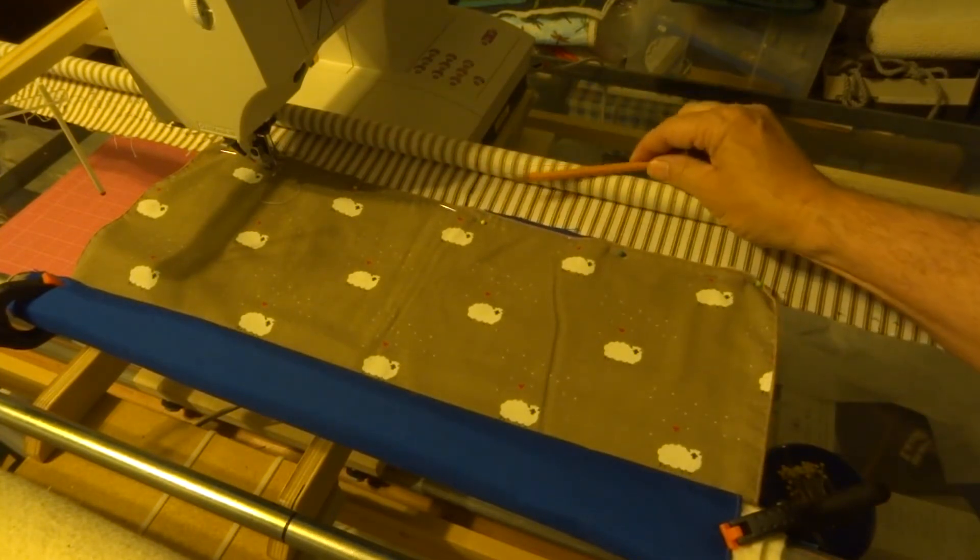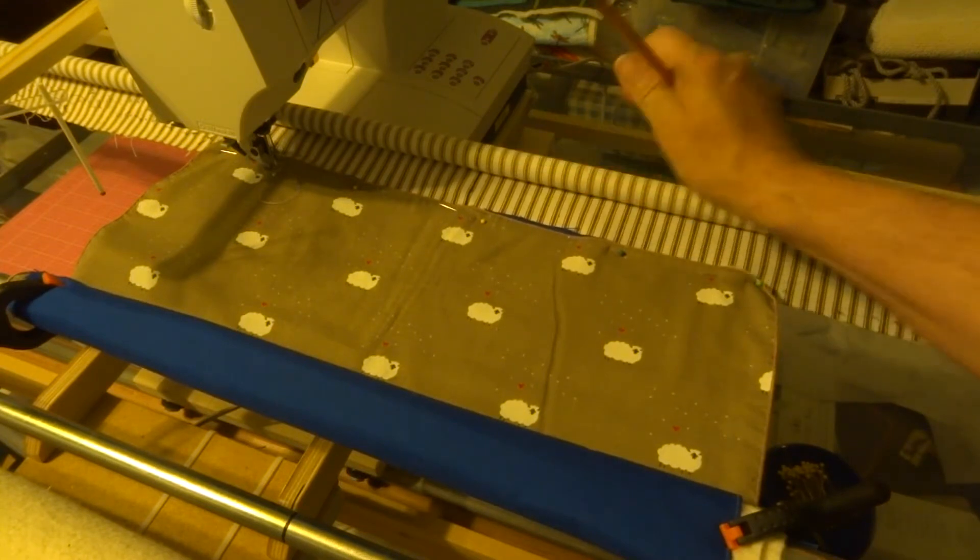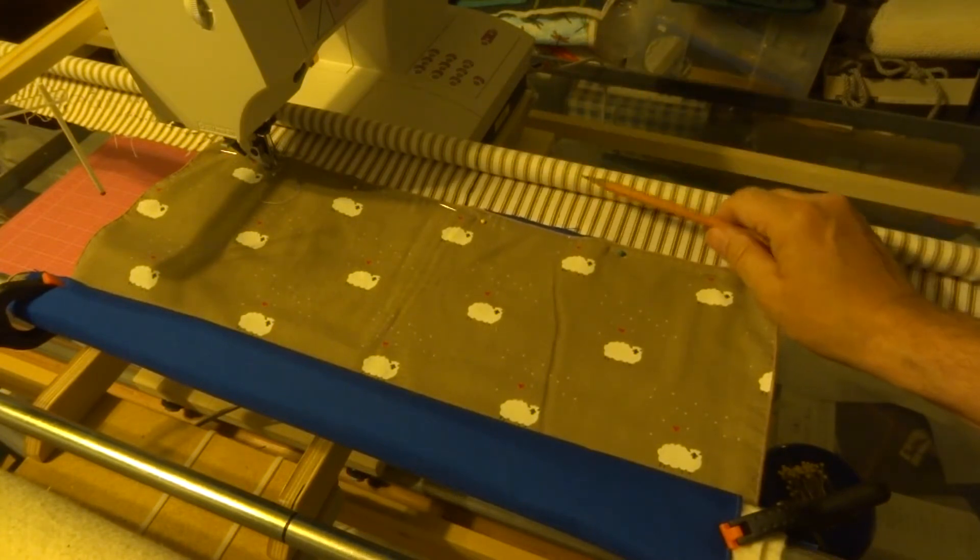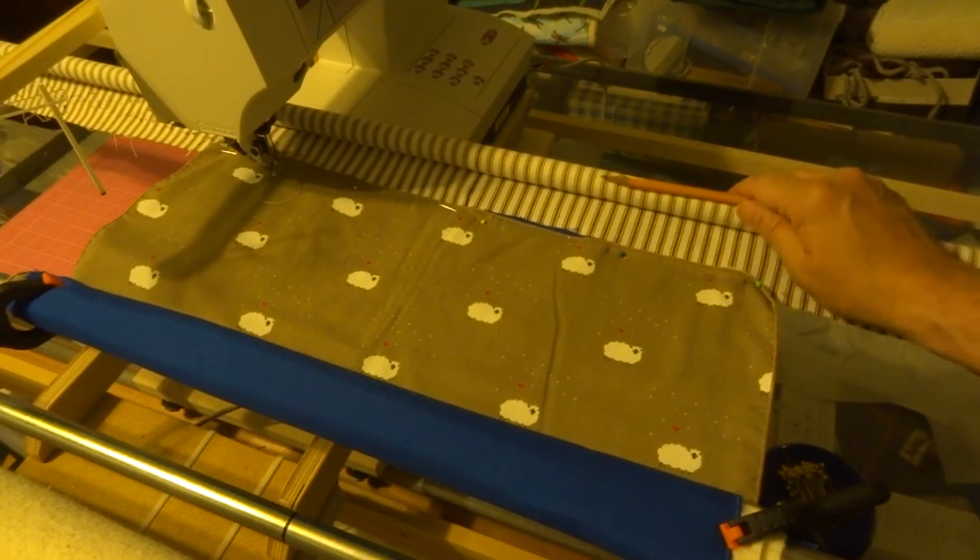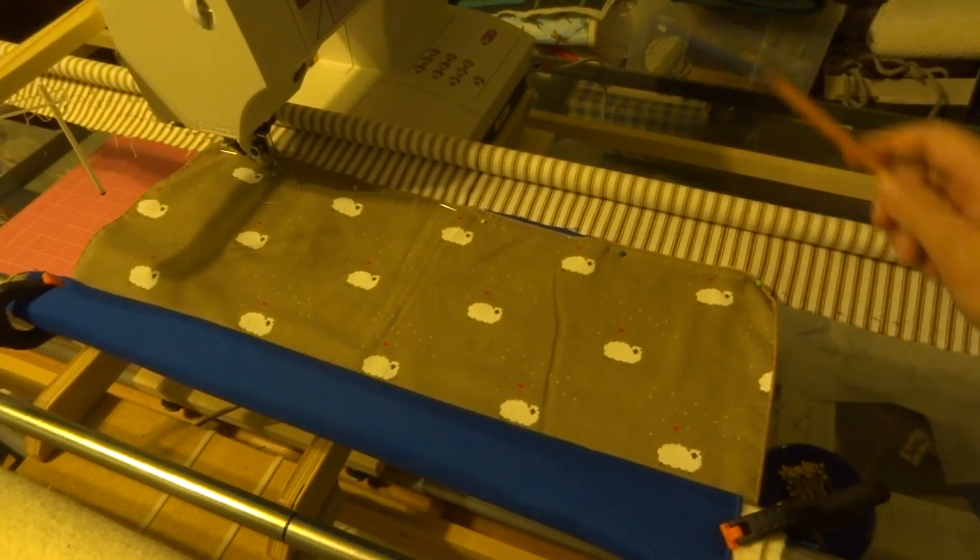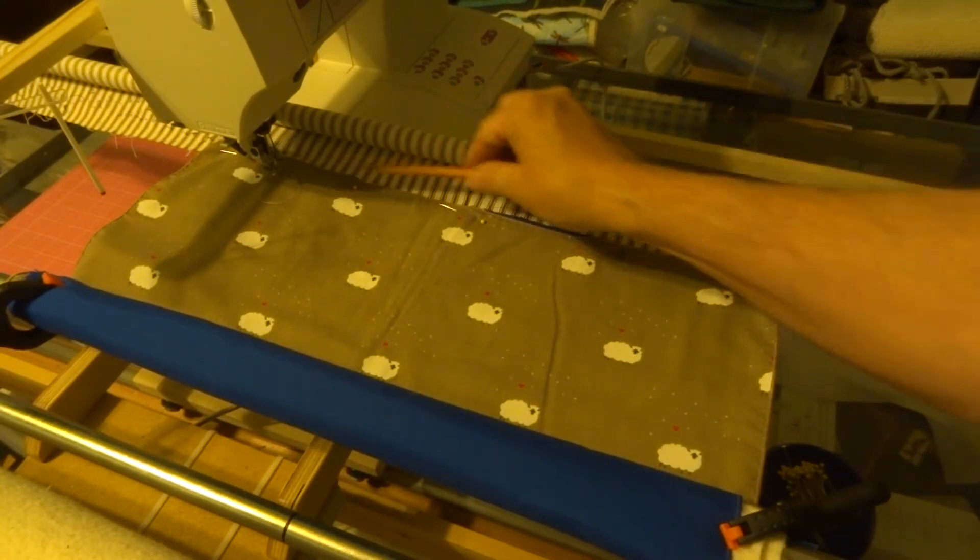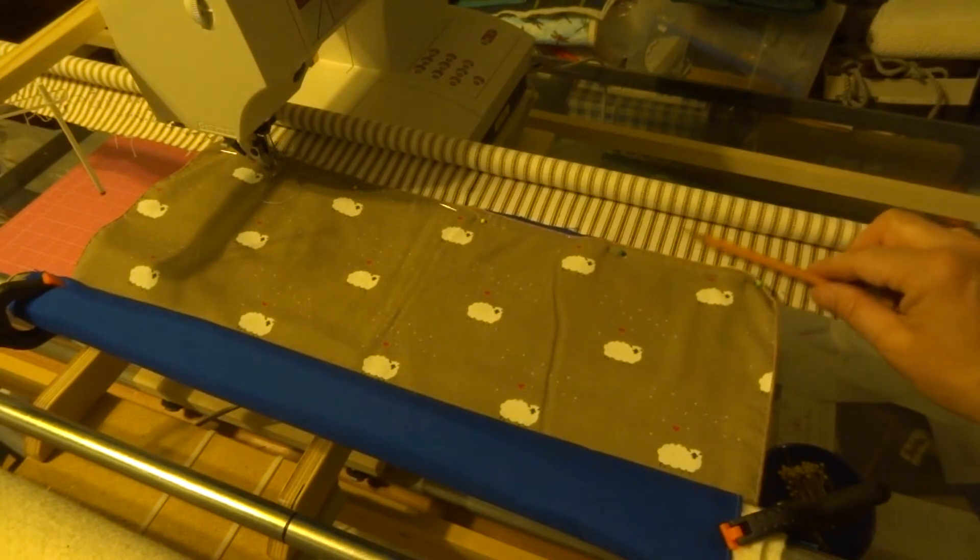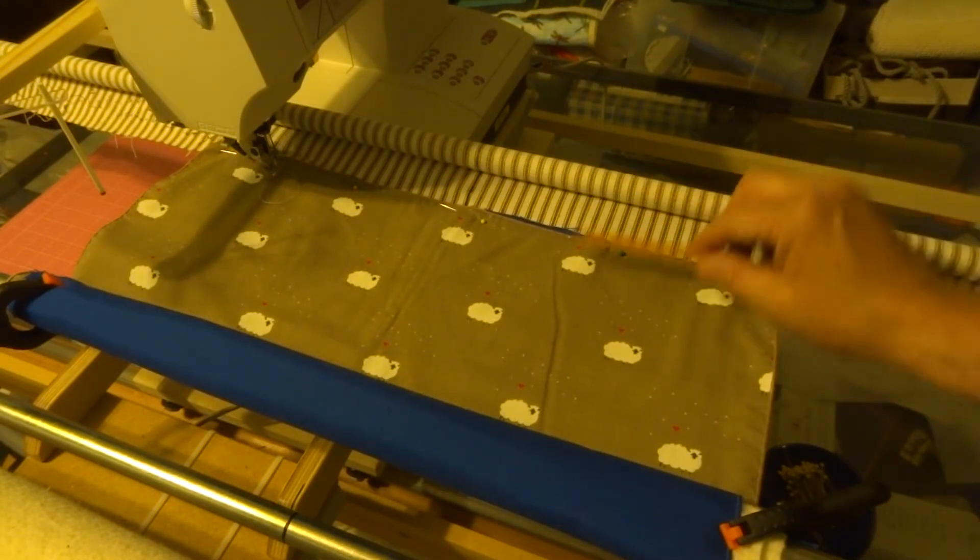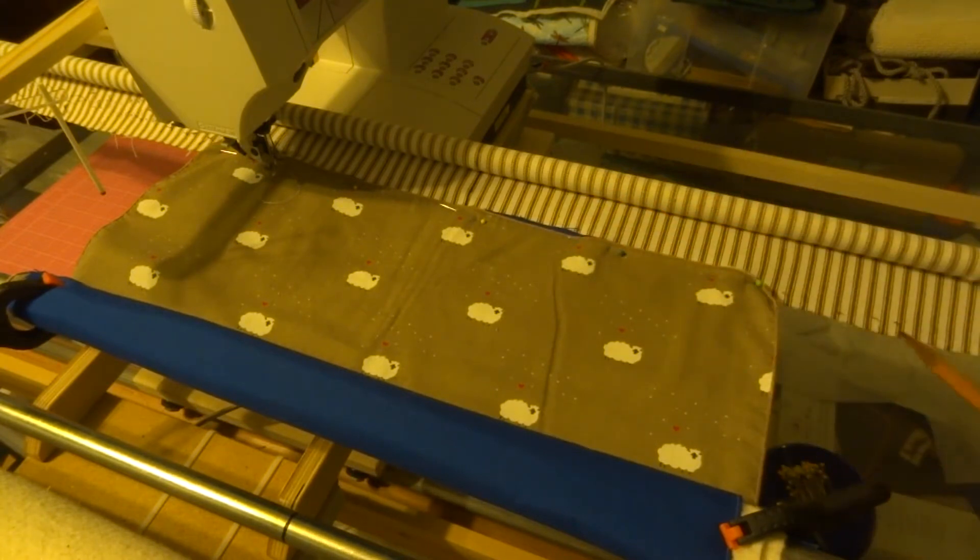Okay, so we've got our test fabric loaded on the machine, just a small patch of it. I put the sandwich together with the top and the batting and the back piece. And you can see this rod here, the take-up pole, has a piece of sacrificial fabric on it that stays on this pole all the time. And you can see here I've got our sample pinned to the edge of this.